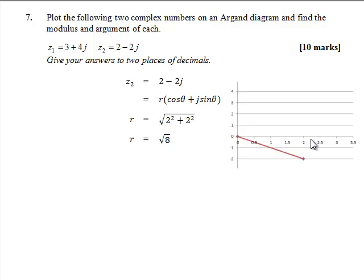The argument is the arctangent of minus 2 over 2 which is actually one of the standard triangles that we know. So we can write Z2 as the modulus which is root 8 and the argument which is minus pi over 4.